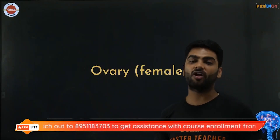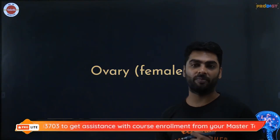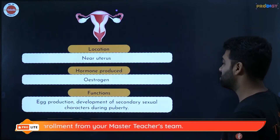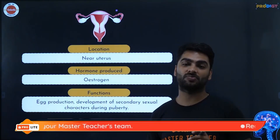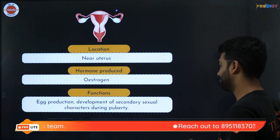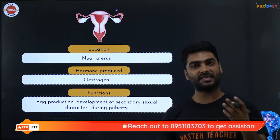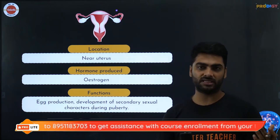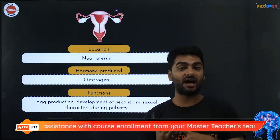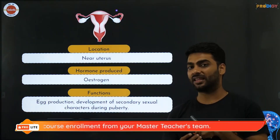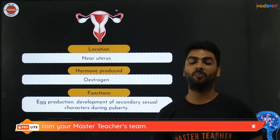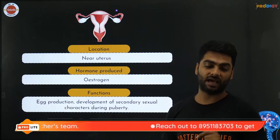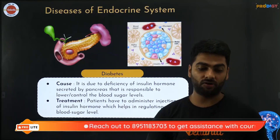A pair of ovaries is present in females in the lower abdominal region. The ovaries secrete estrogen and progesterone. Estrogen is responsible for secondary sexual characters in females — development of breasts, fat deposition in hips, armpit and pubic hair, acne, and the menstrual cycle. Progesterone is responsible for maintaining pregnancy. Note the spelling: it is oestrogen (O-E-S-T-R-O-G-E-N).